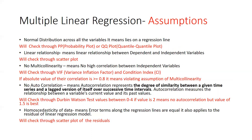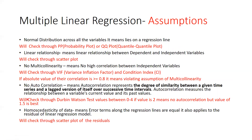First of all, there should be a linear relationship — that means a linear relationship between dependent and independent variables. How do we check this linear relationship? We will check through a scatter plot. The second most important assumption is normal distribution across all the variables, meaning the data lies on a regression line.